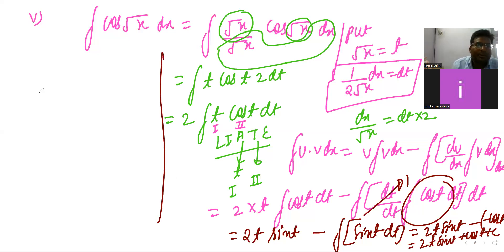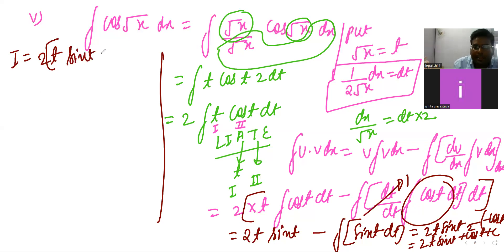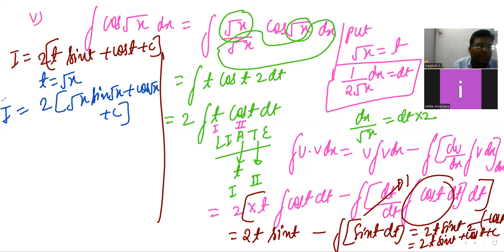Now put the value of t. Since t = √x, I equals 2 of the whole: t·sin(t) + cos(t), which gives 2[√x · sin(√x) + cos(√x)] + C. So this is the final answer.